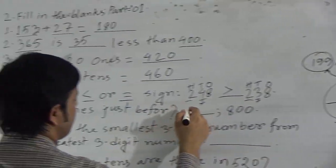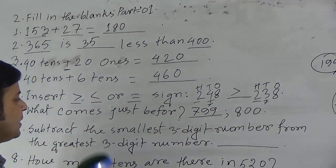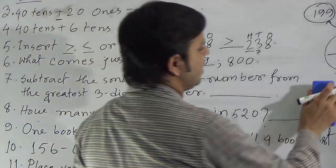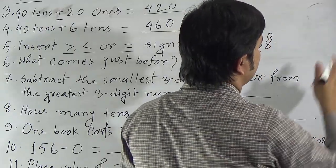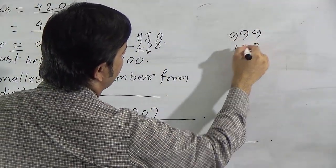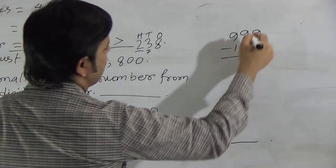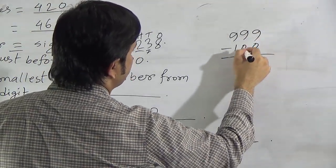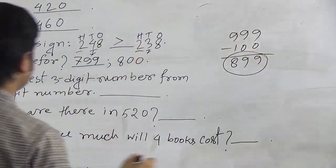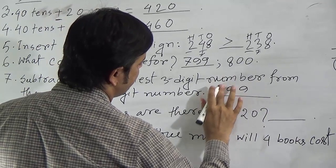Question 7: Subtract the smallest 3-digit number from the greatest 3-digit number. The greatest 3-digit number is 999, and the smallest 3-digit number is 100. Subtracting: 9 minus 0 is 9, 9 minus 0 is 9, 9 minus 1 is 8. The answer is 899.